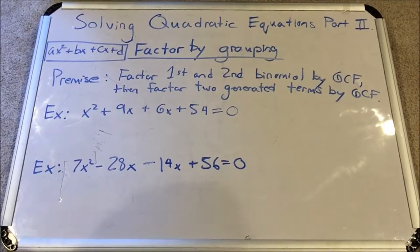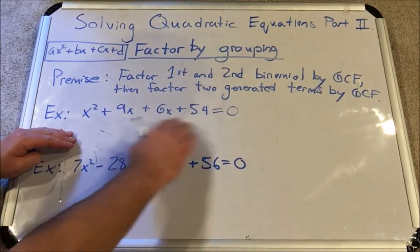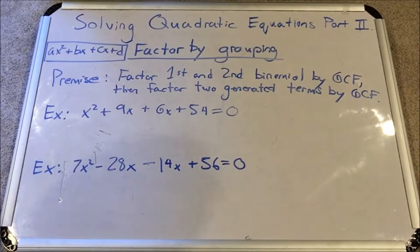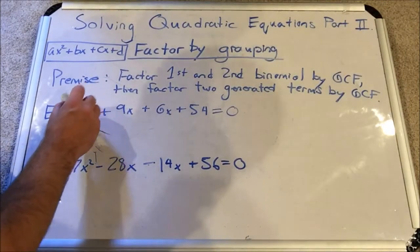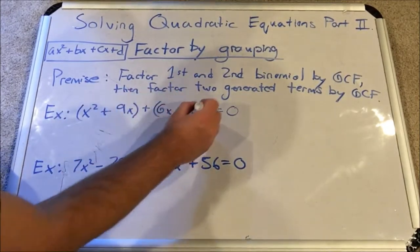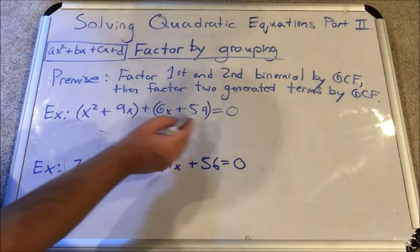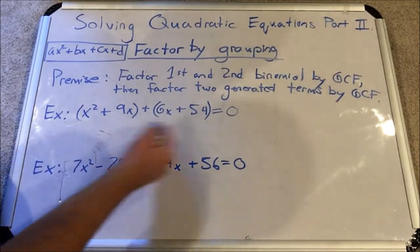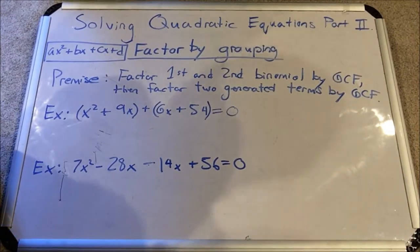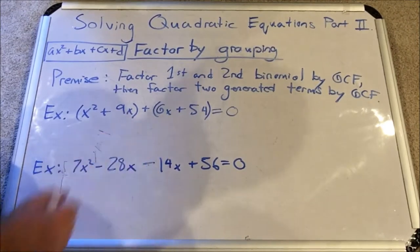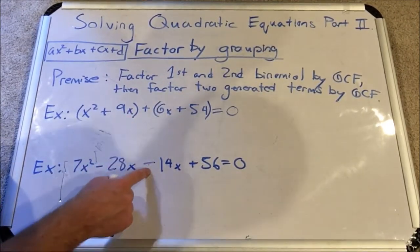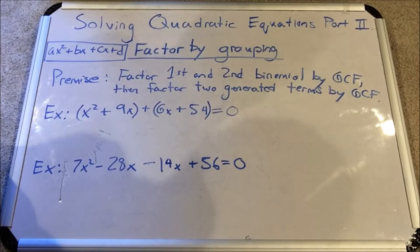The premise is to do GCF — greatest common factor style factoring — twice. We separate the first and second binomial and factor those by GCF, then factor the two generated terms. You're going to rope off the first binomial and the second binomial. If there's a plus between them you're fine; if there is a minus you have to be a little more careful, and I'll go over that in the next example.